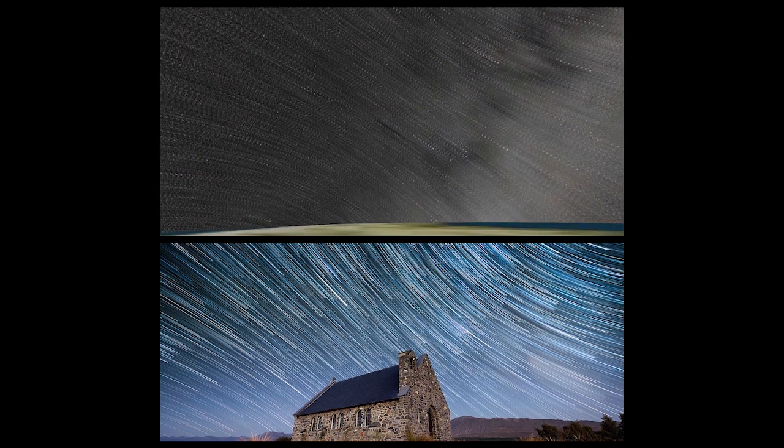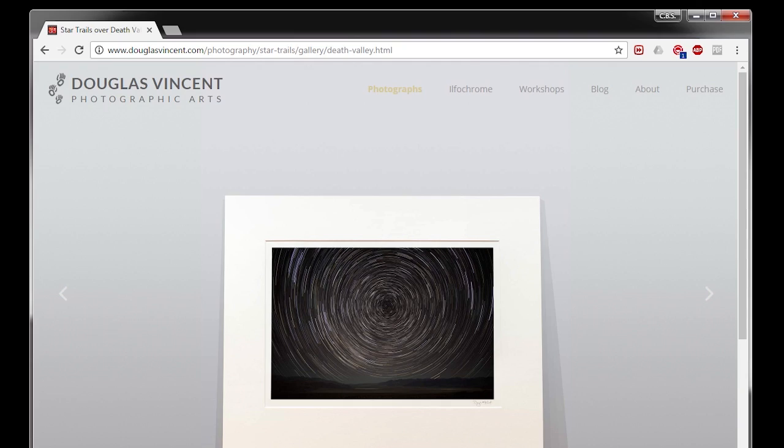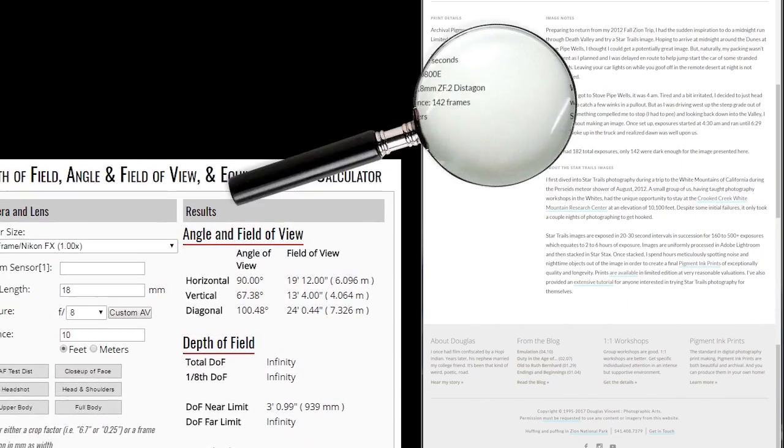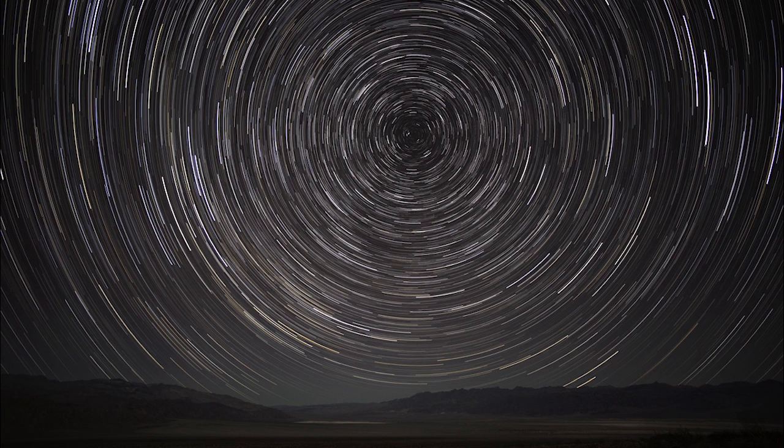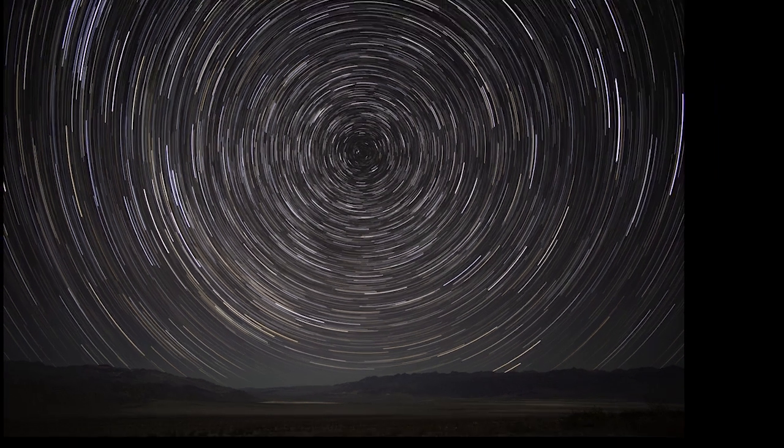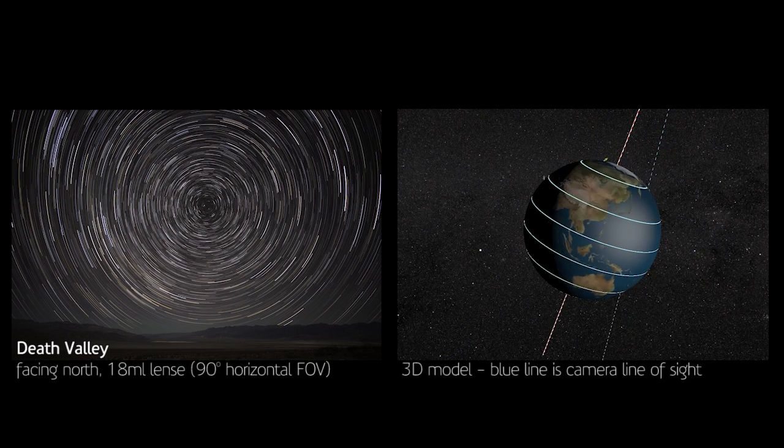Next I found a photo taken from Death Valley in California. This time we know it's taken from an 18mm lens, which is a 90 degree horizontal field of view, and because the star trails are in the center of the frame, we can conclude that the camera is pointing north. Once again, that's pretty much identical.